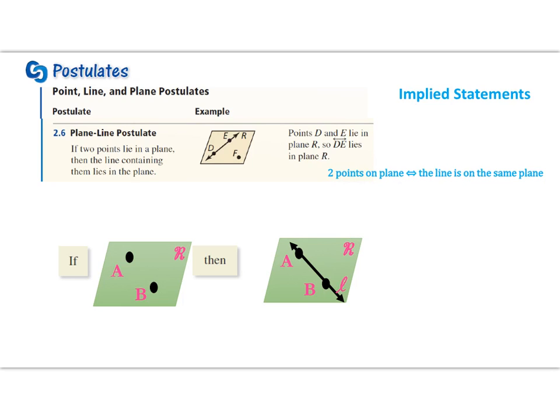It doesn't have to look exactly like this, but what we're communicating in our picture is if there are two points that lie in a plane, then the line containing them lies in the plane.